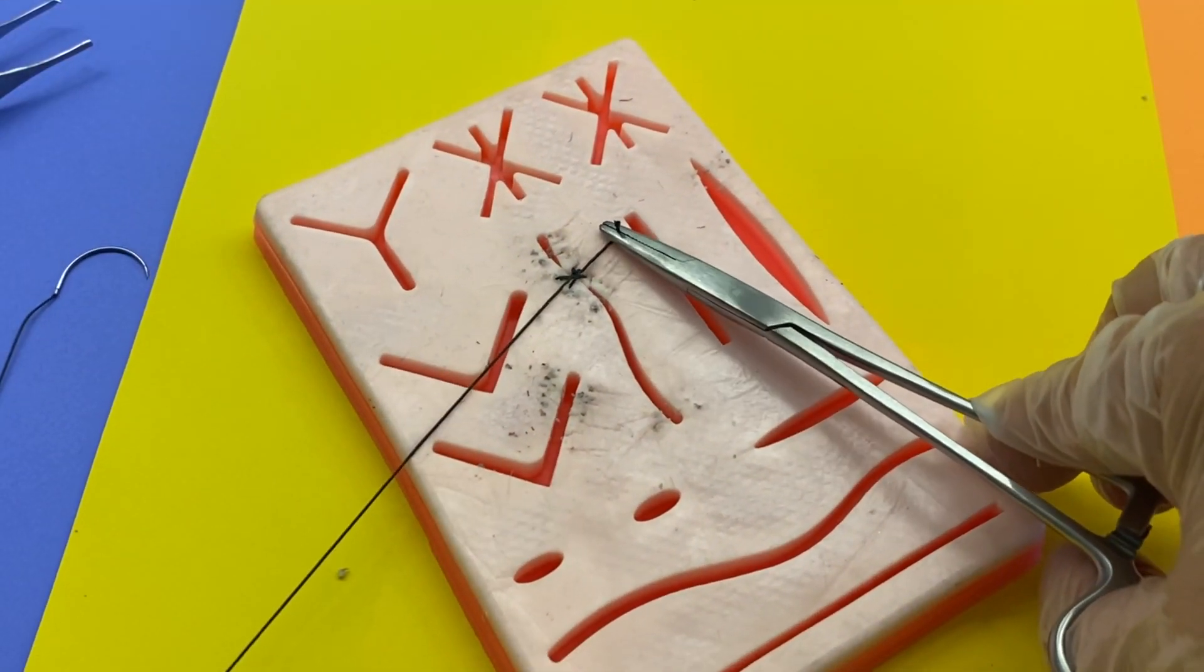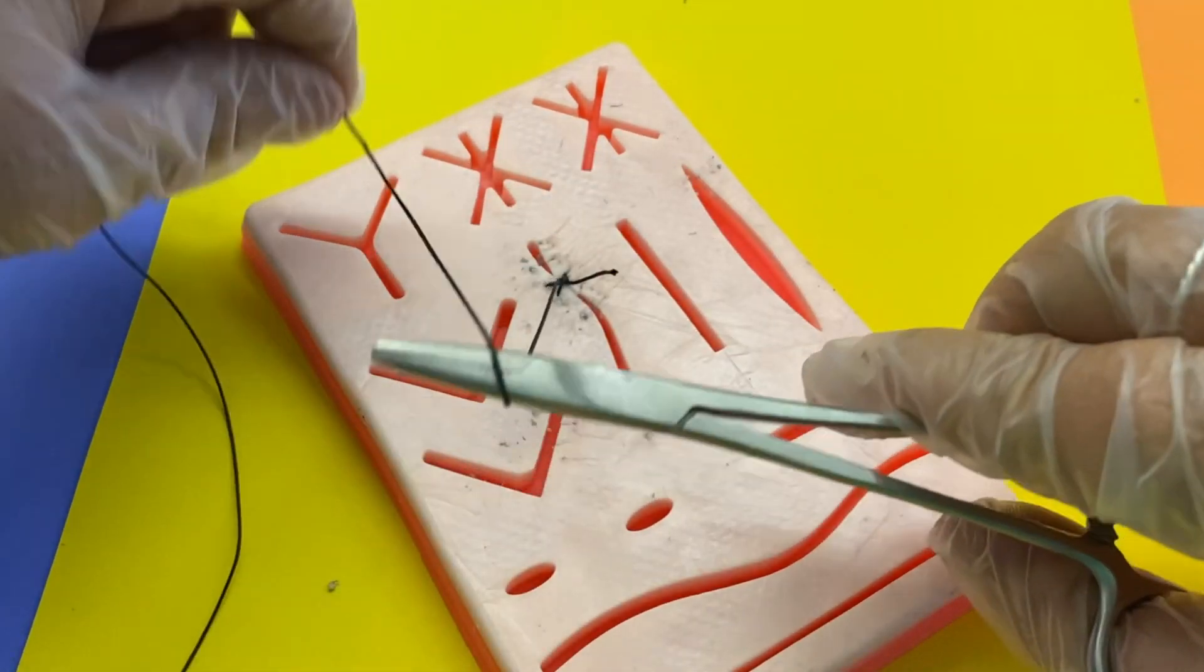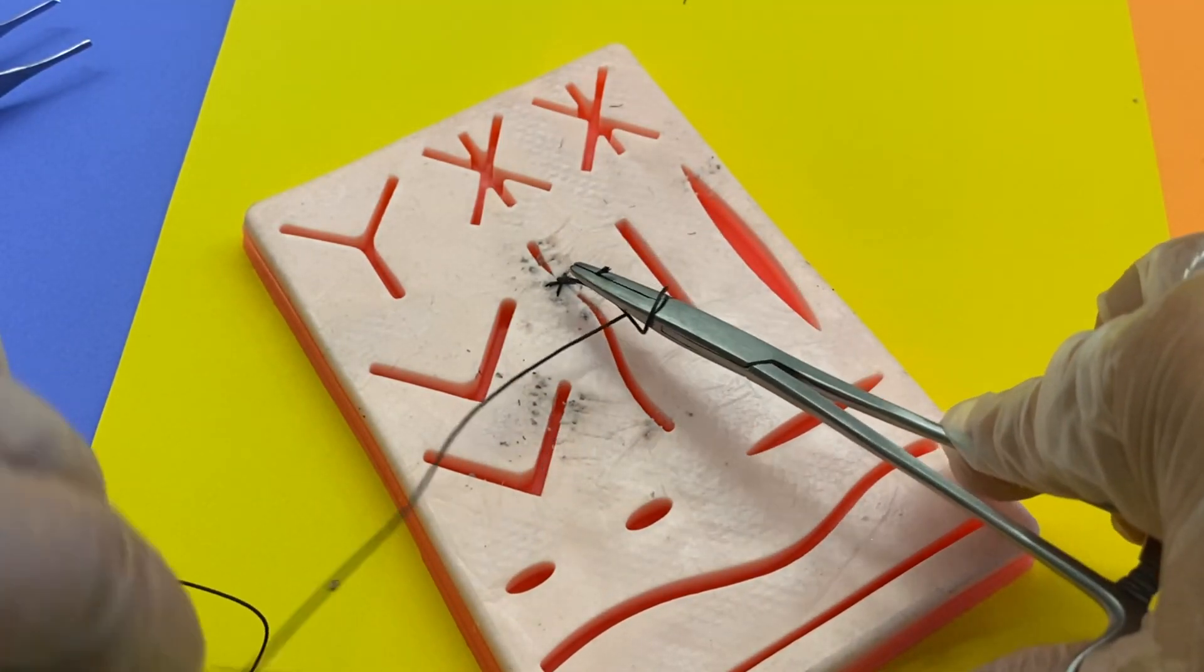Then move your arm to the right to tighten. Now pull it back to the left again. And now you're going to make your throw. Wrap around once, grab the thread and pull through.